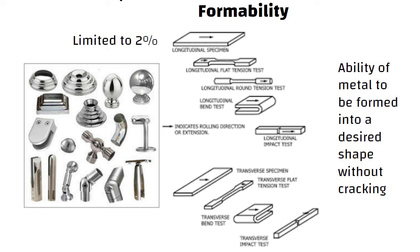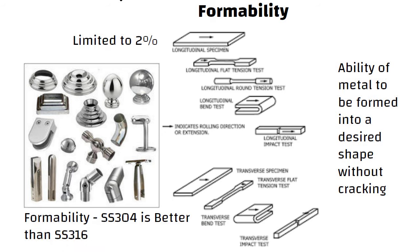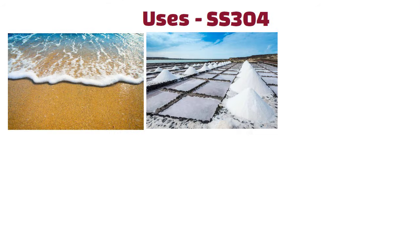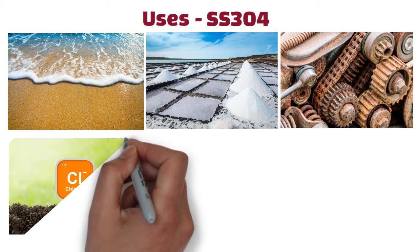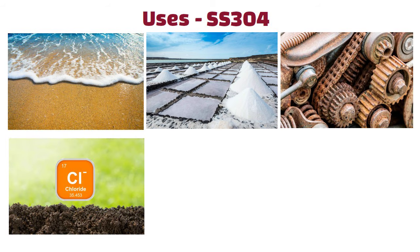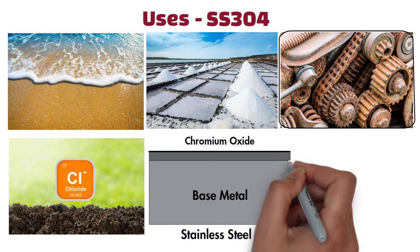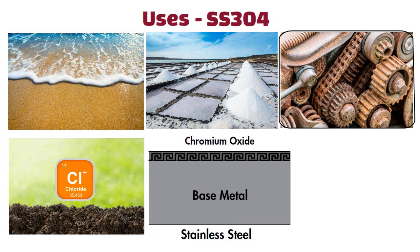When we talk about formability, SS304 is better than SS316. Seawater and salt air can be especially damaging to metals. Besides the rough environment of sea and marine applications, chlorides such as salt can eat away even the toughest metals. Salt will even compromise the protective oxide layer of grade 304 stainless steel, resulting in rust.